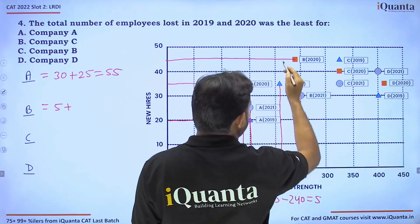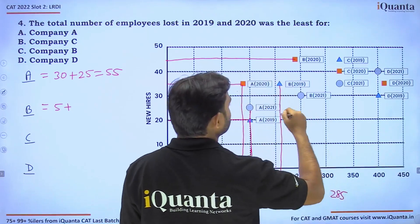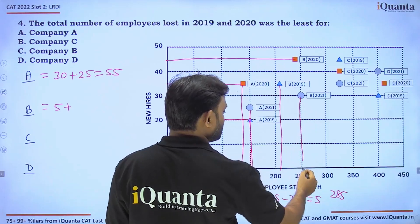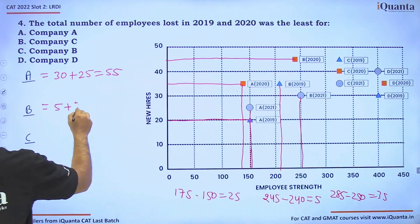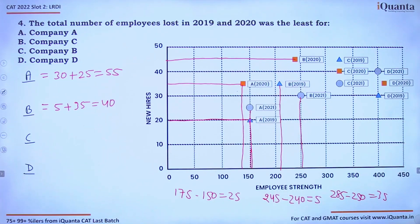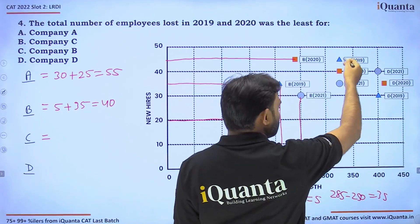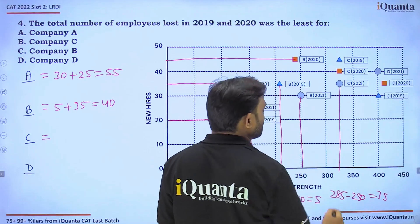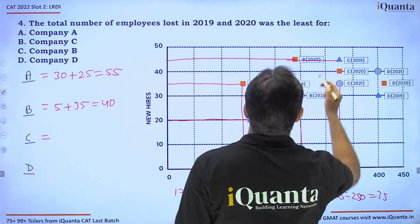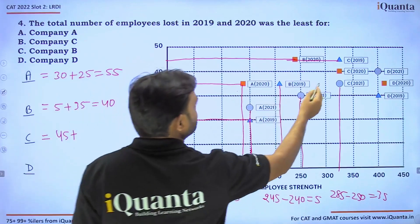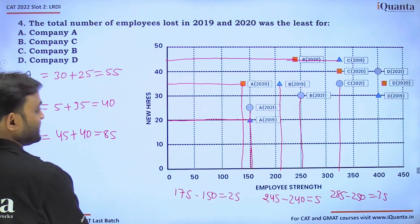For B in 2020, 240 plus 45 gives 285, but in 2021 there are 250 employees, so 35 were lost — totaling 40 employees lost for company B over both years. For company C, the number of employees is the same every year, so all new hires are effectively lost: 45 in 2019 plus 40 in 2020 equals 85 employees lost.